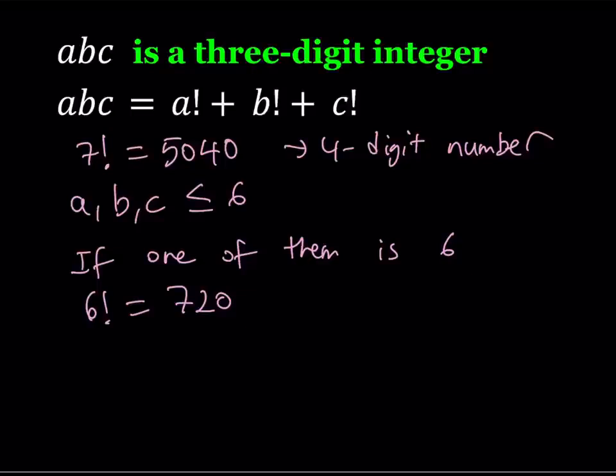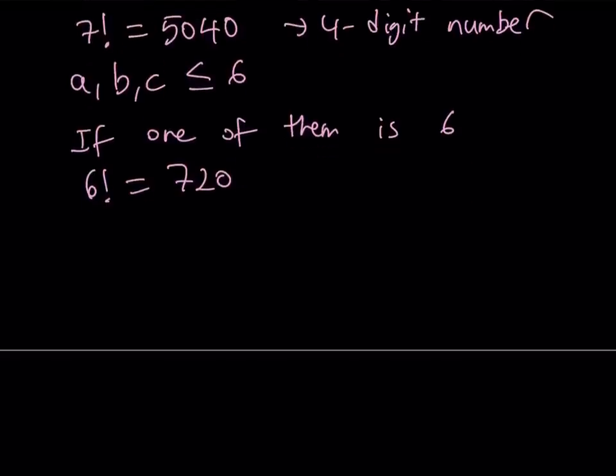But this is impossible because we cannot use 7, 8, or 9. We already proved that ABC needs to be less than or equal to 6. So none of these digits can be a 6 either. So this gives us a better upper bound. ABC basically needs to be less than or equal to 5.